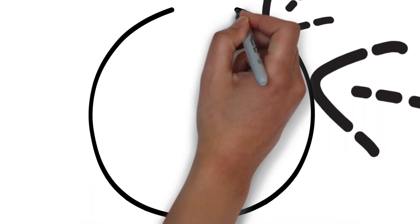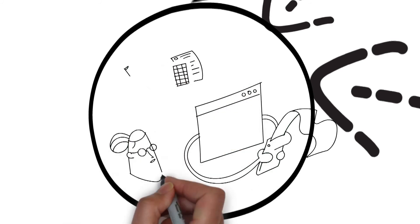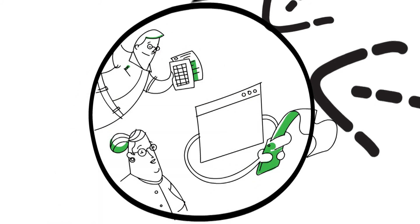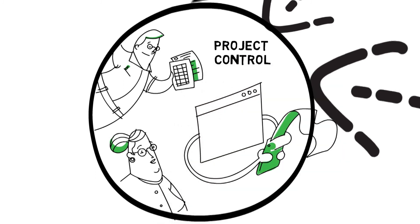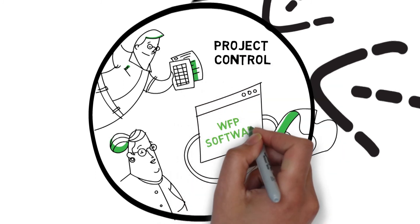One of the key functions of the workface planning software is its ability to calculate planned value for each model component. In order to achieve this, the information manager coordinates with the project controls team to develop a matrix of installation rates and rules of progress that are then loaded into the software.